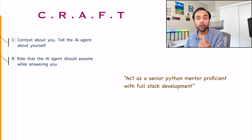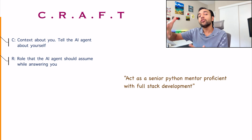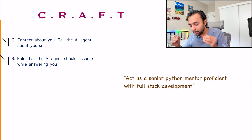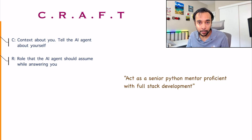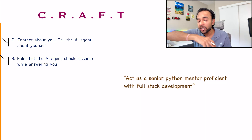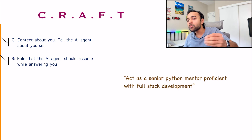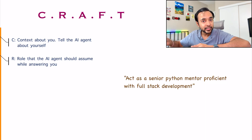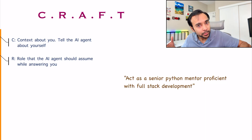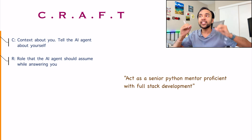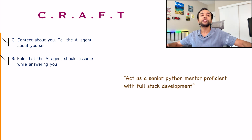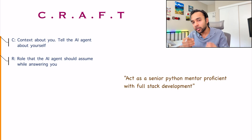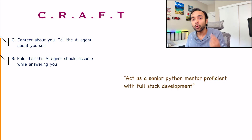The next part is R, or Role — how you want your chat model to behave. For example, I am telling it: 'Act as a senior Python mentor who is proficient with full stack development.' You are setting up a scenario in which your AI model should behave. The AI can treat you differently — if you ask it to be strict, it will be strict; if you ask it to be a teacher, it can assume that role; if you ask it to be a therapist, it can assume that role as well.